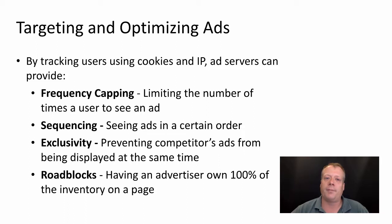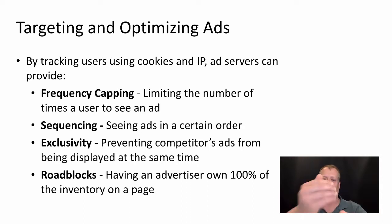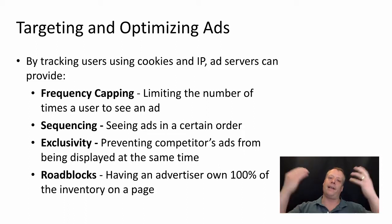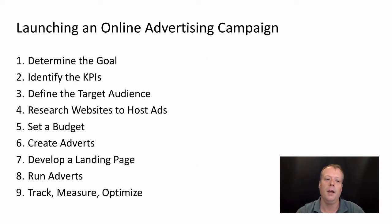We also have the ability to target and optimize ads in ways that weren't possible in non-digital settings. By tracking users using cookies, IP addresses, and ad servers, you can implement things like frequency capping — limiting the number of times a user sees an ad — sequencing, which ensures ads are seen in a particular order, exclusivity, which prevents a competitor's ads from appearing on the same page, and even a roadblock, where an advertiser buys an entire page of ads so no other ads appear, even from non-competitors.